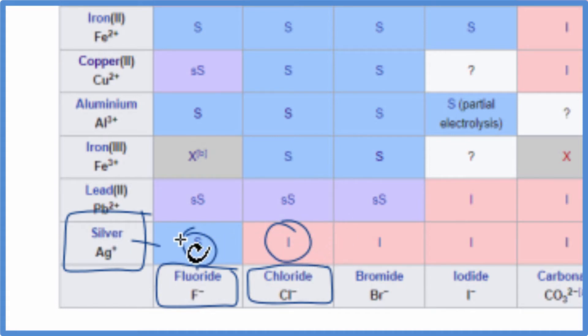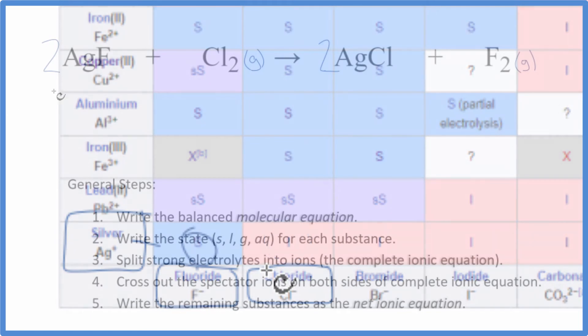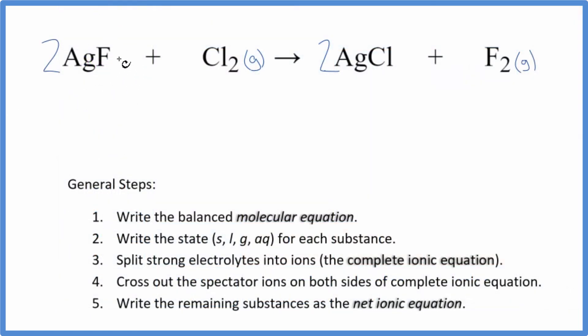So we have AgF is aqueous. It's dissolved in water. AgCl, that's a solid. Let's go back to our equation. So we said AgF, that's gonna be aqueous. It'll dissolve in water. And then AgCl, that'll be a solid. It's insoluble. So we have the states for each substance.